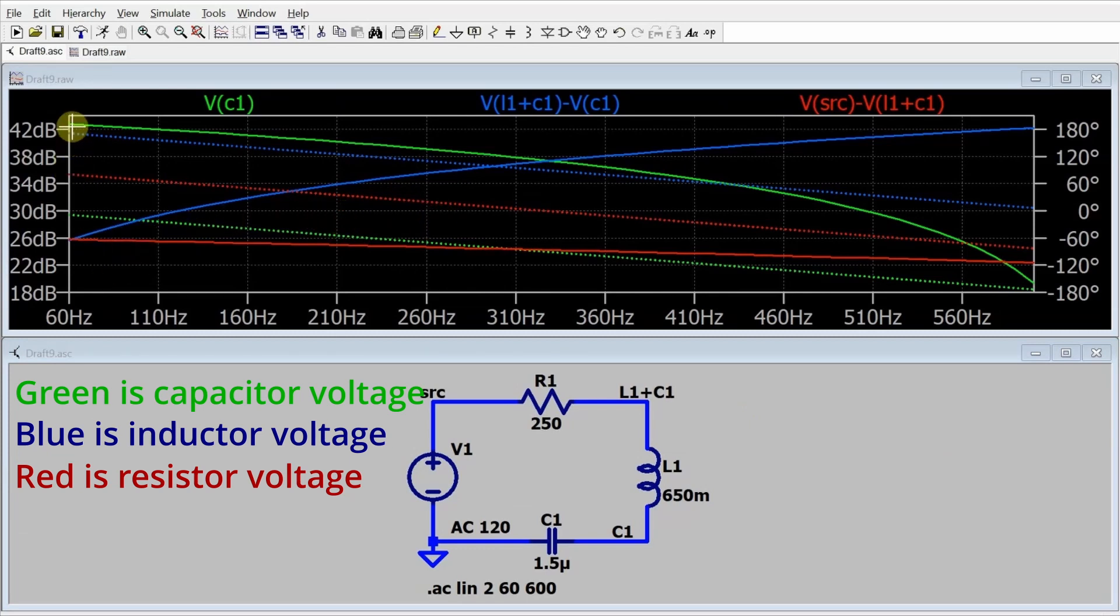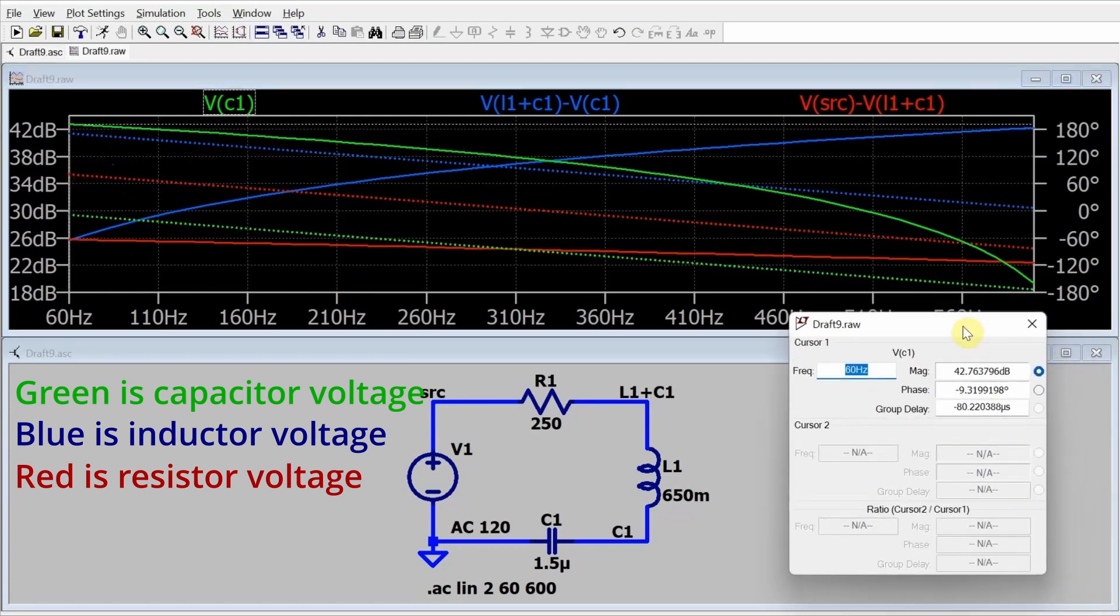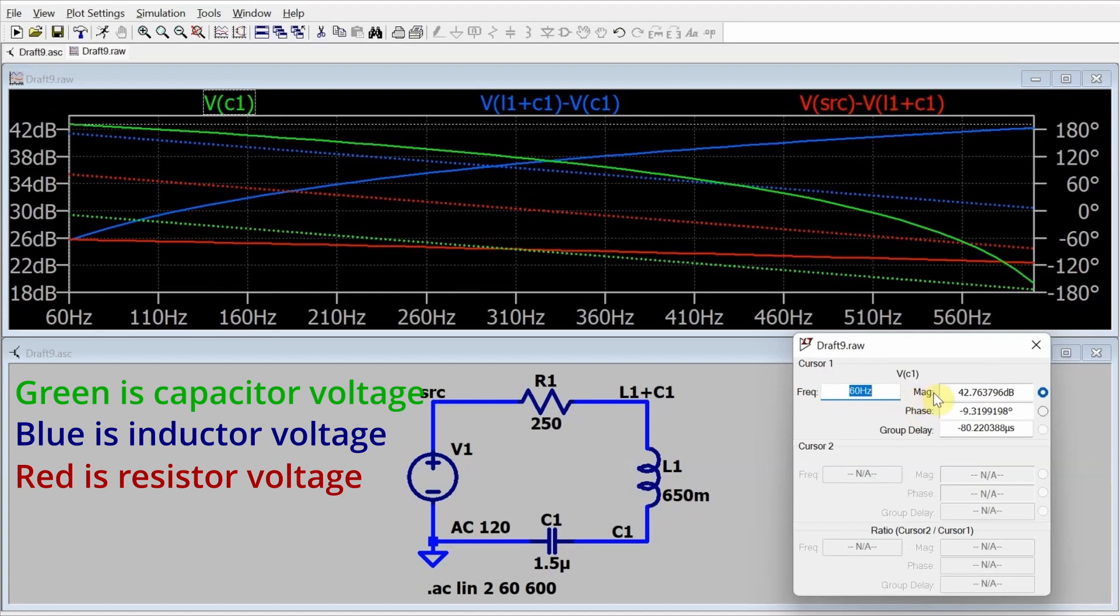Now the only point that I care about is down here at 60 hertz. And if I click on C1, I get this cursor that pops up and I can drag that all the way over to the left, which is at 60 hertz. And I can bring up this reading and this shows me the magnitude and the phase at 60 hertz of the voltage across the capacitor.